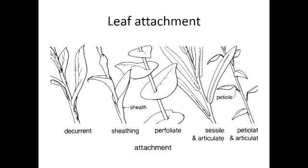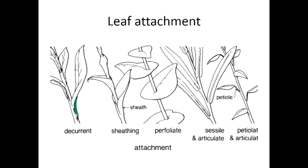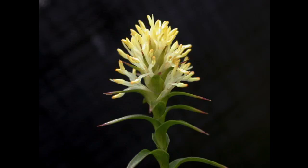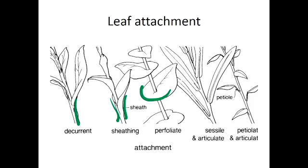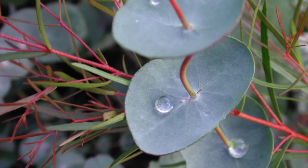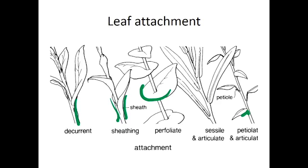The way that the leaves are attached to the stem can also differ from the normal leafstalk called petiole. In some cases you can have the leaf extending down the stem or sheathing the stem or fusing around the stem or appearing jointed at a particular angle.